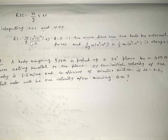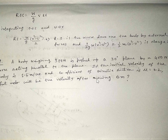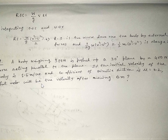Let us take an example to clarify the concept. A body weighing 300 N is pushed up a 30° inclined plane by a 400 N force acting parallel to the plane. The initial velocity of the body is 1.5 m/s and the coefficient of kinetic friction is μₖ = 0.2. We need to find the velocity of the body after it has moved 6 meters along the inclined plane.